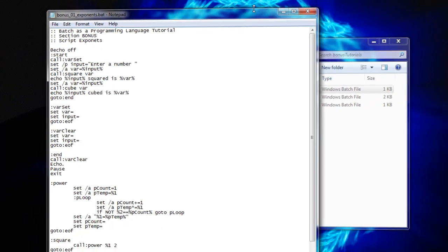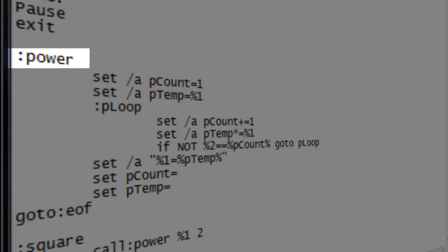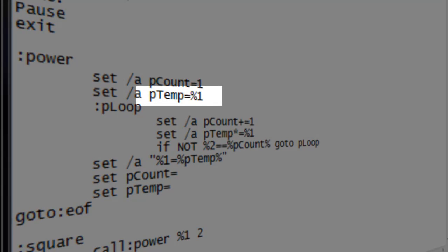Getting into the script itself. We create our power function. We then create a number variable called pcount and initialize it with a value of 1. We also create a temporary number variable called ptemp and initialize its value to the first parameter.